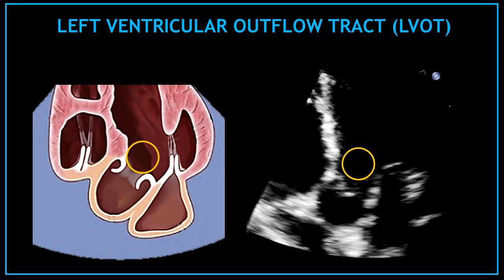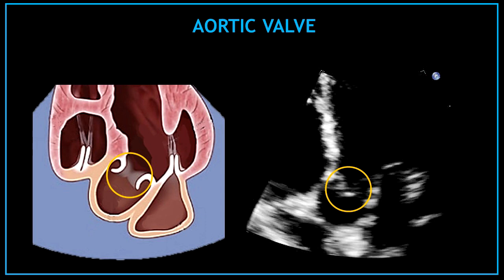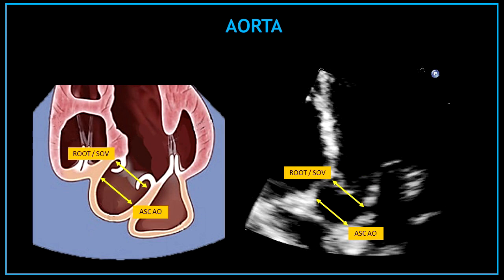The first new structure we can visualize in the apical 5 chamber view is the left ventricular outflow tract. The left ventricular outflow tract is this tiny space approximately up to 1 cm from the aortic valve annulus. One of the most important structures visualized in the apical 5 chamber view is the aortic valve. We can also visualize the aortic root or the sinus of Valsalva and part of the proximal ascending aorta.